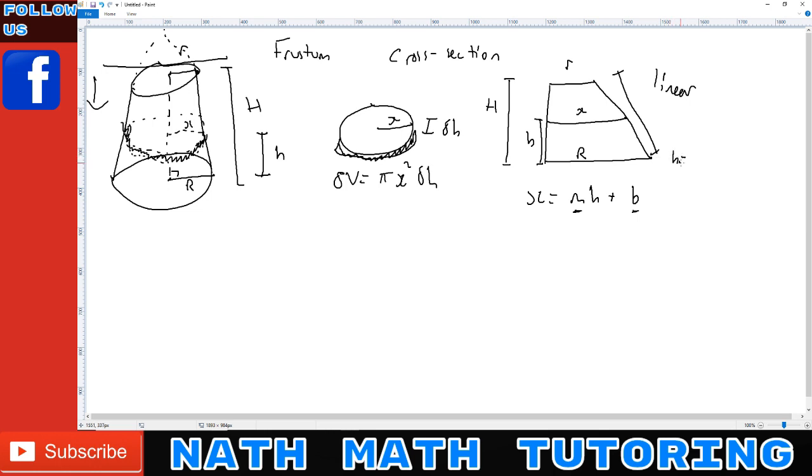I need to work out what m and b are. At the bottom, little h is zero because height starts at the bottom, and x is big R. At the top, little h is now the total height and x is now the little radius. If I use these two facts I can substitute in and get R = 0 + b, so b equals R. I substitute the other one in and get little r equals m times big H plus R. If we rearrange this I get m is (little r minus big R) over H.